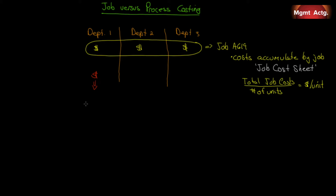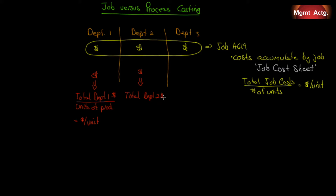Instead of costs accumulating by job, under process costing they now accumulate by department. We track all the costs in department one and divide by the number of units that leave department one — that's our cost per unit for that department. Those units then head to department two; we track any extra costs there, add them to whatever was transferred in, divide by units of production, and get our cost per unit. We do the same in department three.